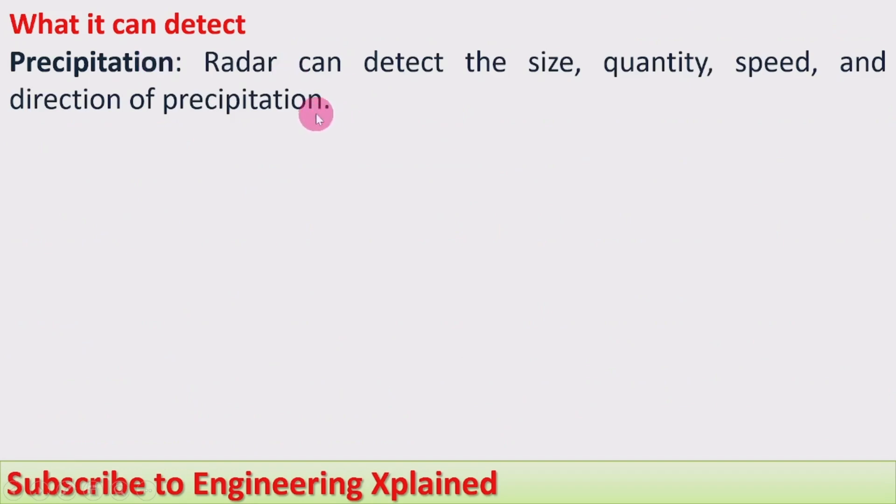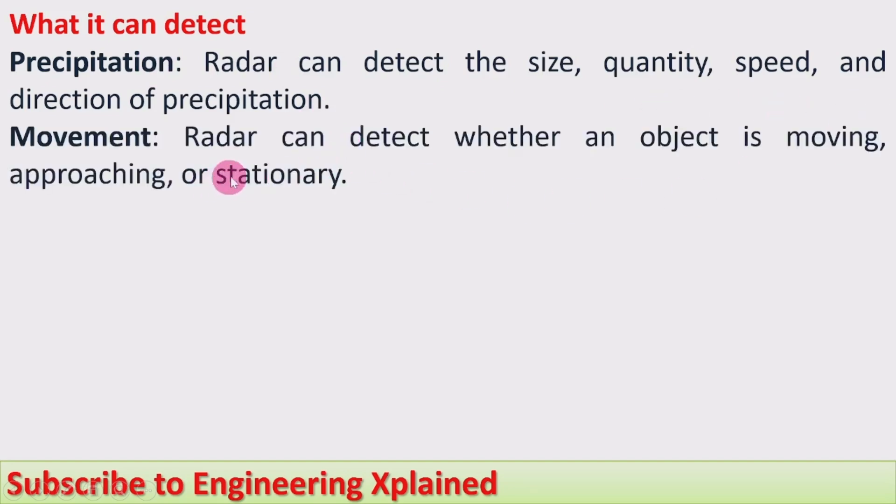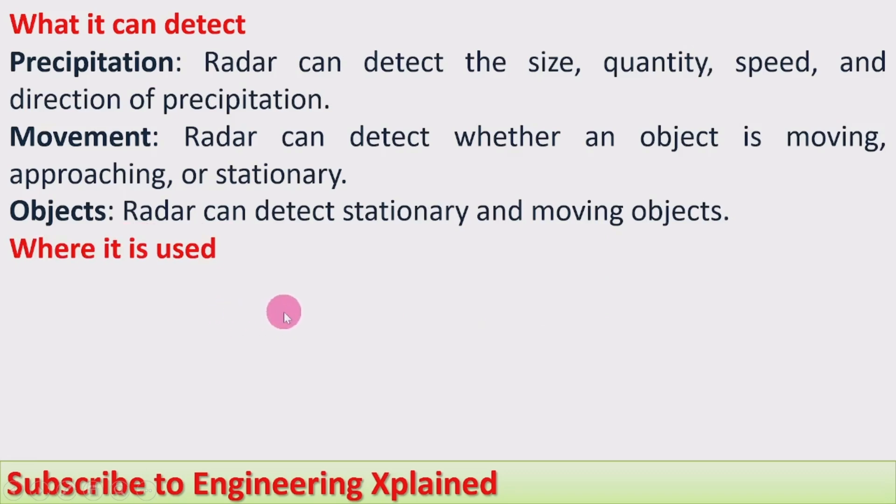What it can detect: Radar can detect the size, quantity, speed, and direction of precipitation movement. Radar can detect whether an object is moving, approaching, or stationary. Radar can detect stationary and moving objects.